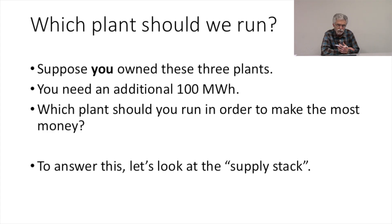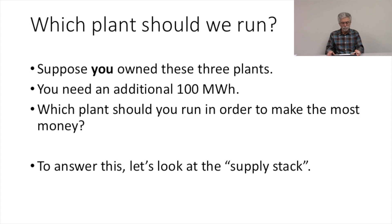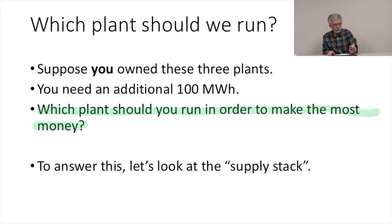So let's come back to the question about which plant we would run. We need an additional 100 megawatts. Suppose you own these three power plants — solar, baseload, peaker — and you have some demand reduction contracts available to you. We need an additional 100 megawatt hours. We're going to abstract from the ramp rate of these plants and assume that the coal plant, the peaker plant, and the solar plant can each give us the 100 additional megawatt hours. So which of these plants would you run to make you the most money? To answer this question, we need to look at the supply stack.